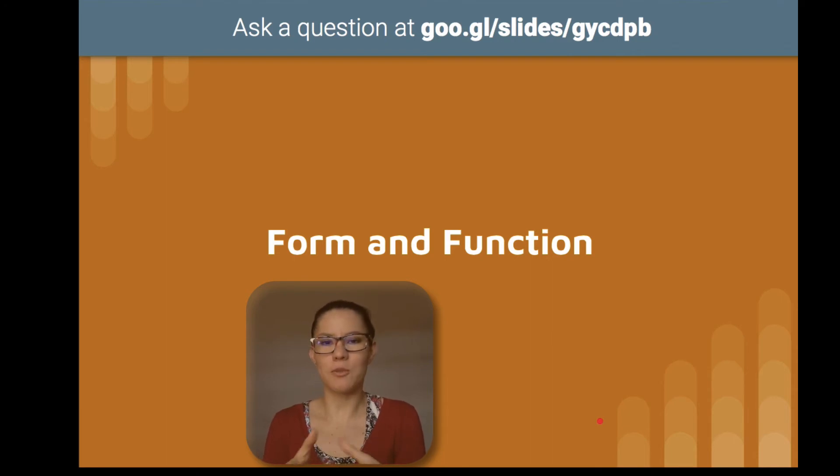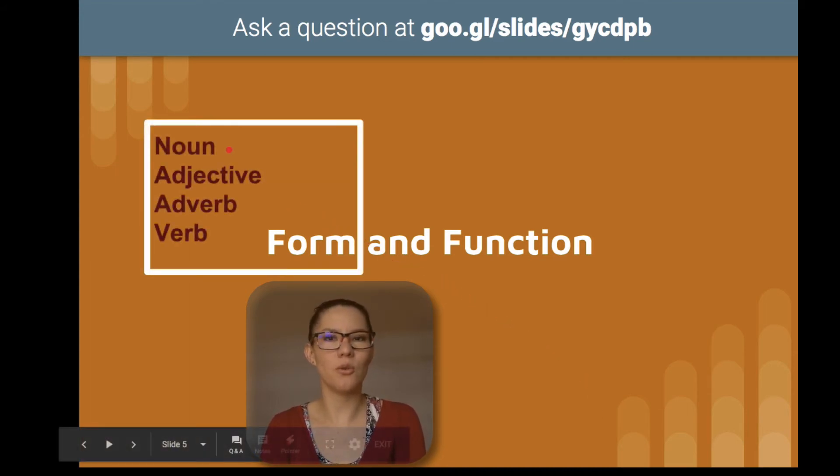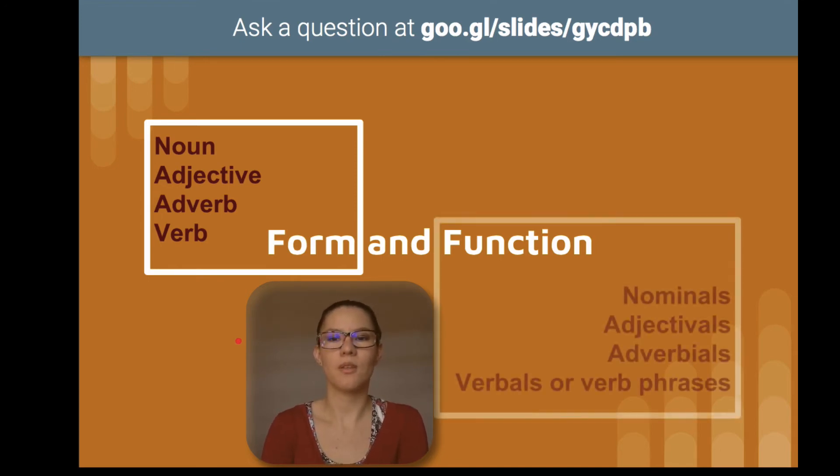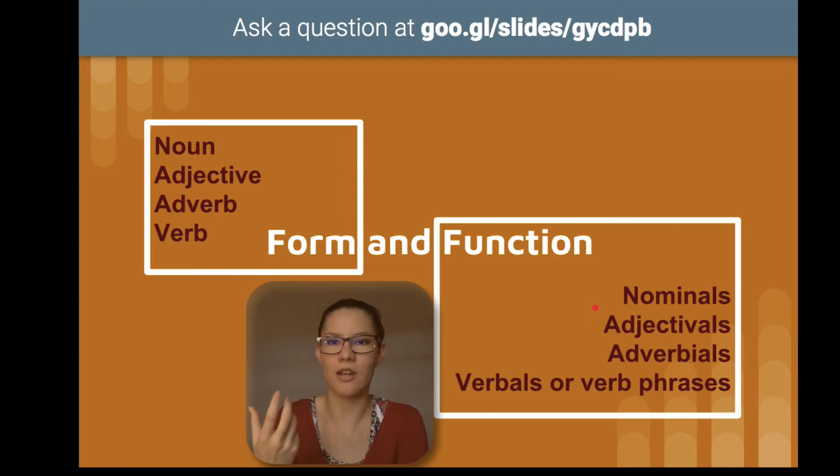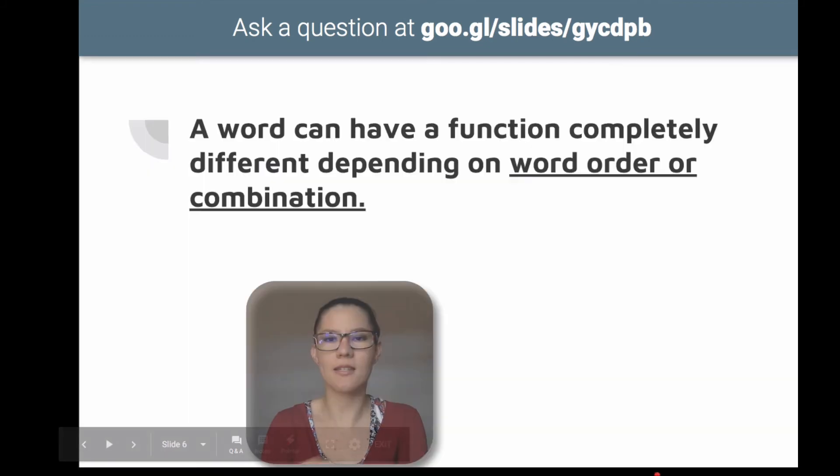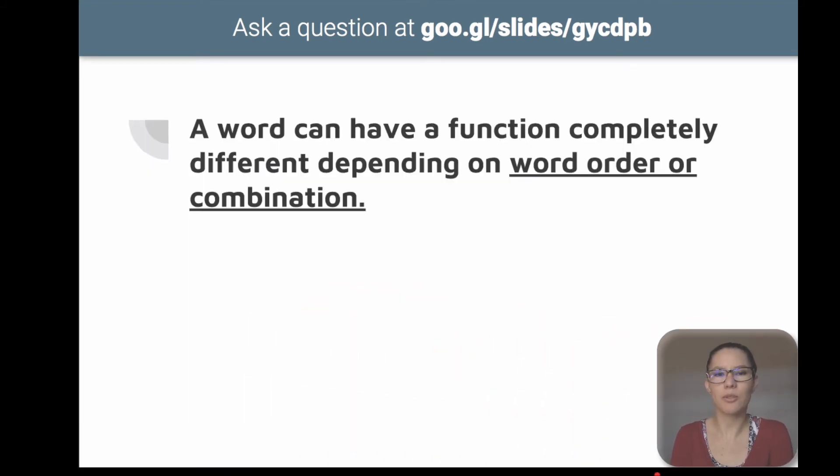Now, what is the difference between form and function? Because this could be confusing. When we talk about form, we refer to the strict grammatical function of a word in isolation. A noun, an adjective, an adverb, a verb. But if we talk about function, we talk about phrases working with a particular meaning, independently on whether they are adjectives, verbs, or nouns. So we have four types that I'm going to explain later. And let's see this important aspect here. It's really important to take into account that a word can have a function completely different depending on word order or combination. Let me show you another example.